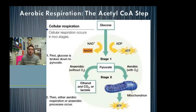We continue on through respiration, and we've come to a crossroads here. Recall we've gone through glycolysis — glucose has been split from a six-carbon molecule into two three-carbon pyruvate. We've gone through stage one, created a couple ATP, and reduced NAD to create NADH to carry energy to the electron transport chain in stage one. And we have pyruvate.